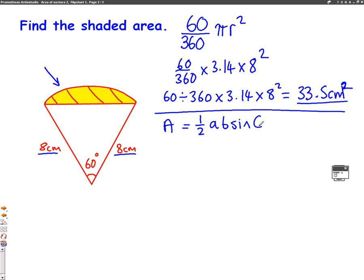Well, a and b are the two sides, either side of the angle that we're using. Well, we're using the angle 60 degrees. And you can see that the two sides next to 60 degrees are both 8 centimeters.